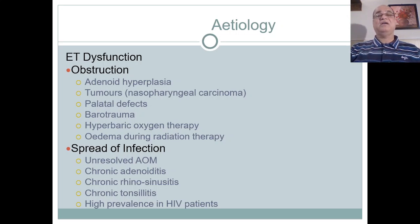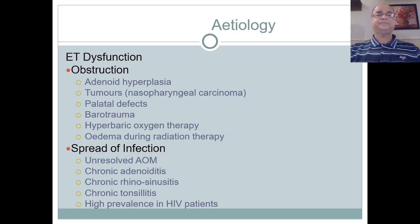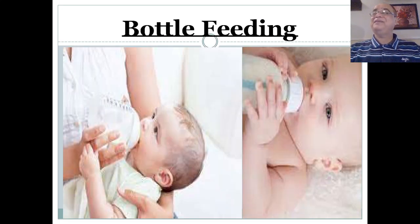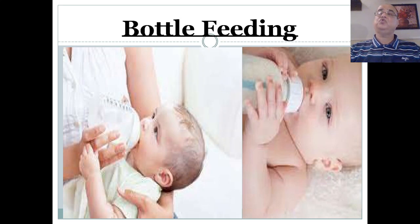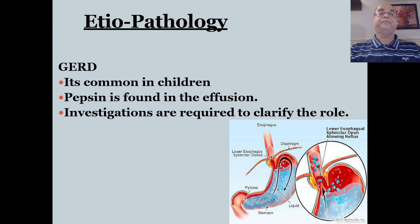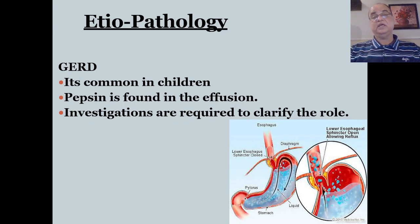Eustachian tube dysfunction can lead to otitis media with effusion. It is a sequela of acute otitis media if not properly treated. Chronic adenoids, chronic rhinosinusitis, chronic tonsillitis, and high prevalence in HIV patients are predisposing factors. Bottle feeding is an important factor, especially if the baby is fed while lying flat — mothers should be instructed to elevate the baby's head to prevent milk from soiling the eustachian tube opening. Pepsin has been found in middle ear effusions, suggesting gastroesophageal reflux disease as a contributing factor.